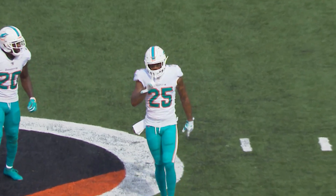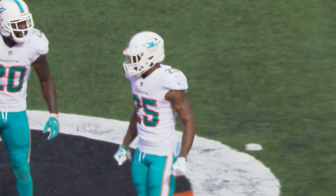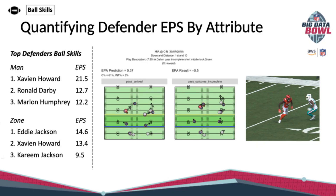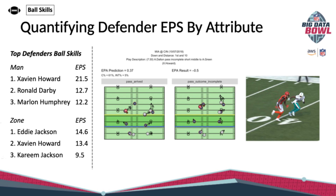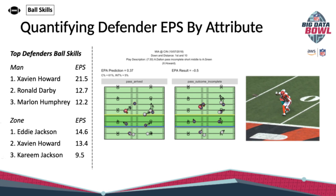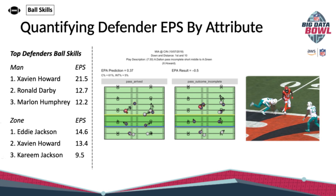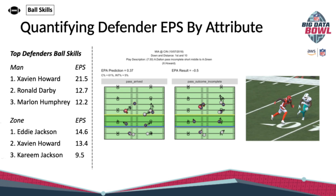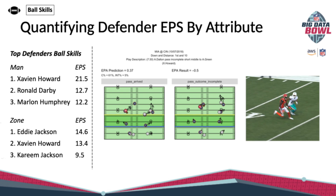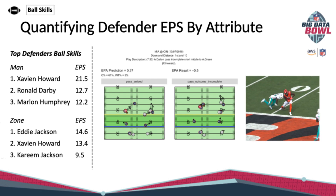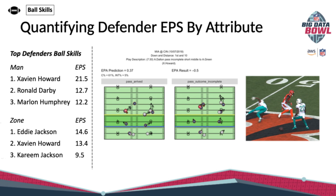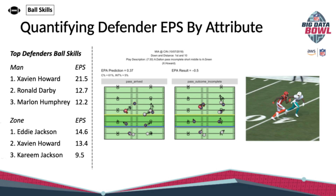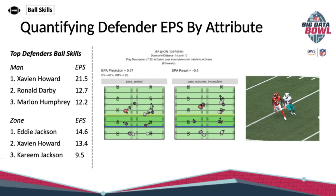So in this one play we would say Xavien Howard saved 0.9 points. Looking at all defenders over the entirety of the season when challenged with a pass attempt at this ball skills stage, Xavien Howard ended up being the number one defender in man coverage saving a little over three touchdowns worth of points, and Eddie Jackson was the top zone defender saving a little over two.